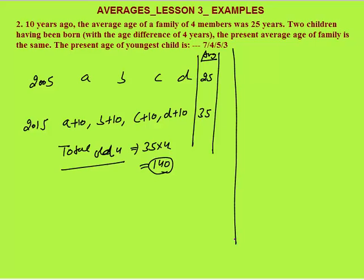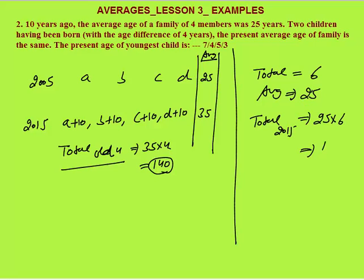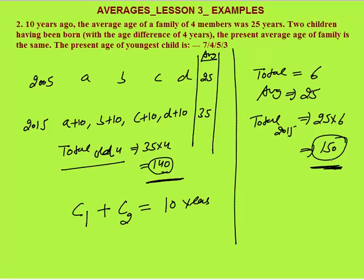Now there are two additional children, making six total members. The question says the average age of the family is still the same — that is 25 years. So the total present age of all six members is 25 into 6 equals 150 years. The total age of the original four members is 140, so by common sense the two children's combined present age is 150 minus 140 equals 10 years.